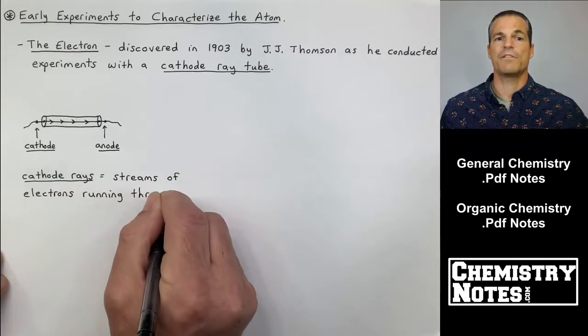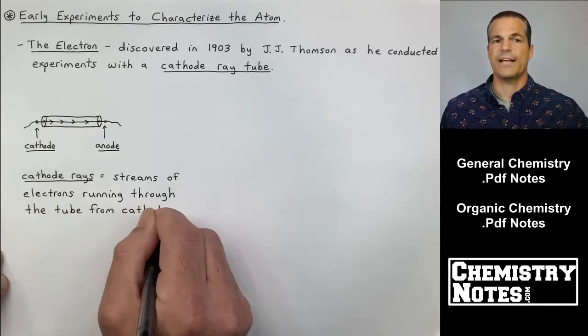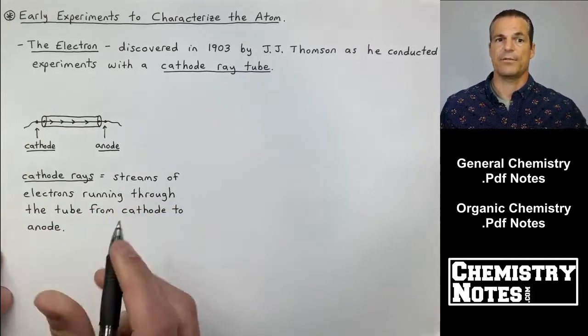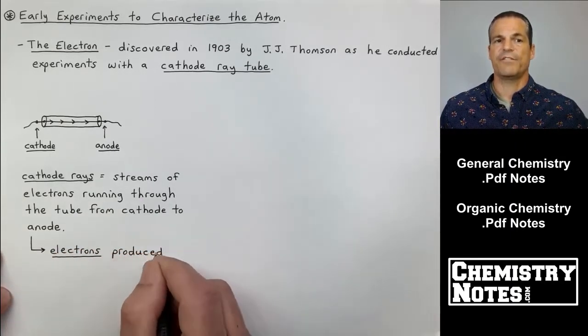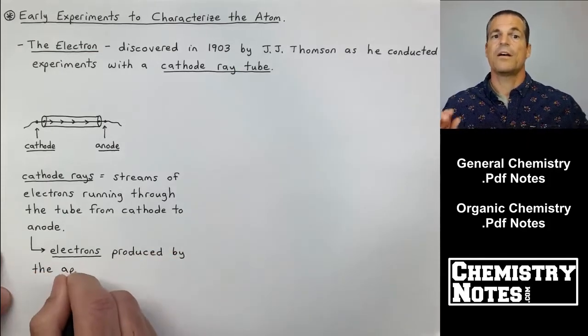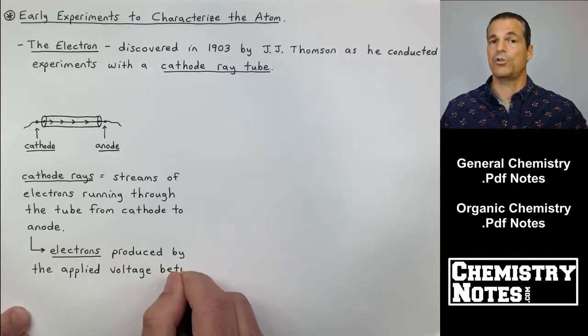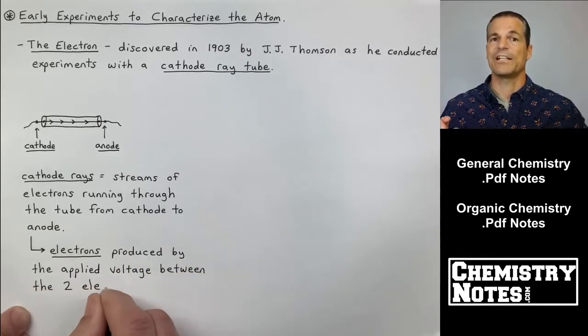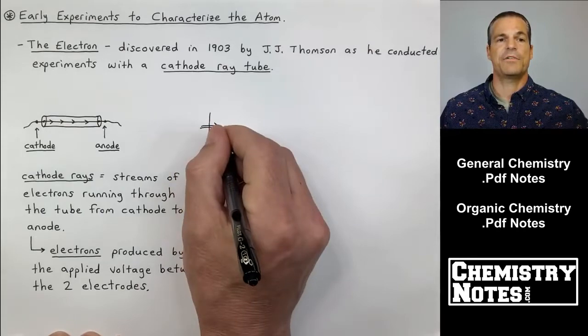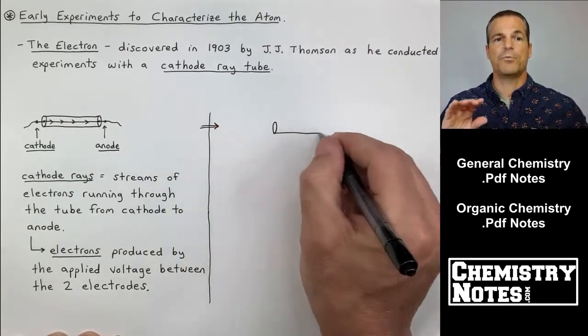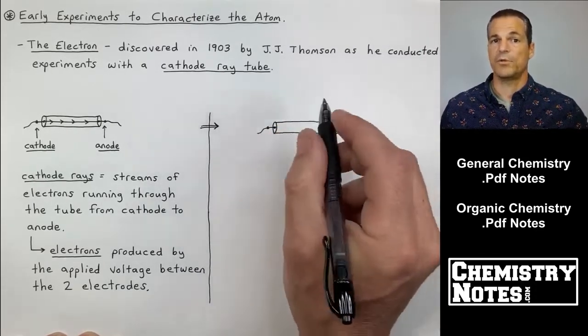Cathode rays are moving from left to right in your notes there. Those are streams of electrons running through the cathode tube, going from cathode to anode. The image you see on the left is just the cathode ray tube by itself. I'm leaving room on the right-hand side of the page because I'm now going to draw a cathode ray tube again, except this time we're going to bring an electrical field into play.